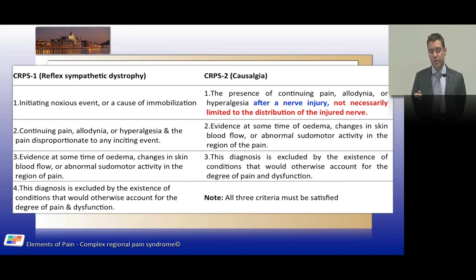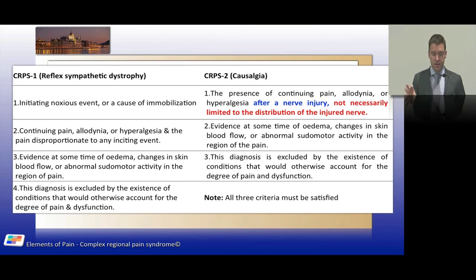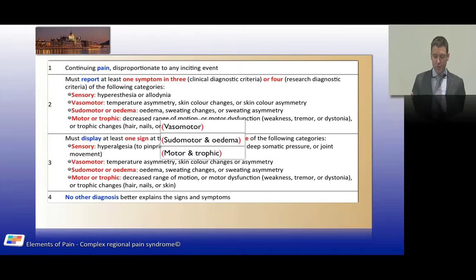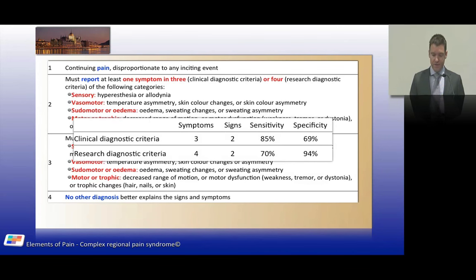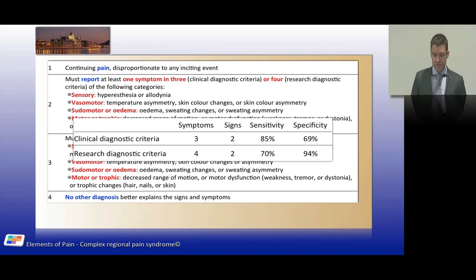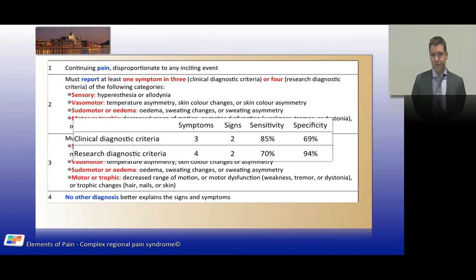Comparing the old and new classifications: the Budapest criteria separated vasomotor changes — temperature and skin changes — into their own category, put pseudomotor and edema together, and combined motor and trophic changes. This separation significantly increased the specificity for both clinical and research diagnostic criteria. The Budapest framework no longer distinguishes CRPS 1 from CRPS 2 — it's simply called CRPS.